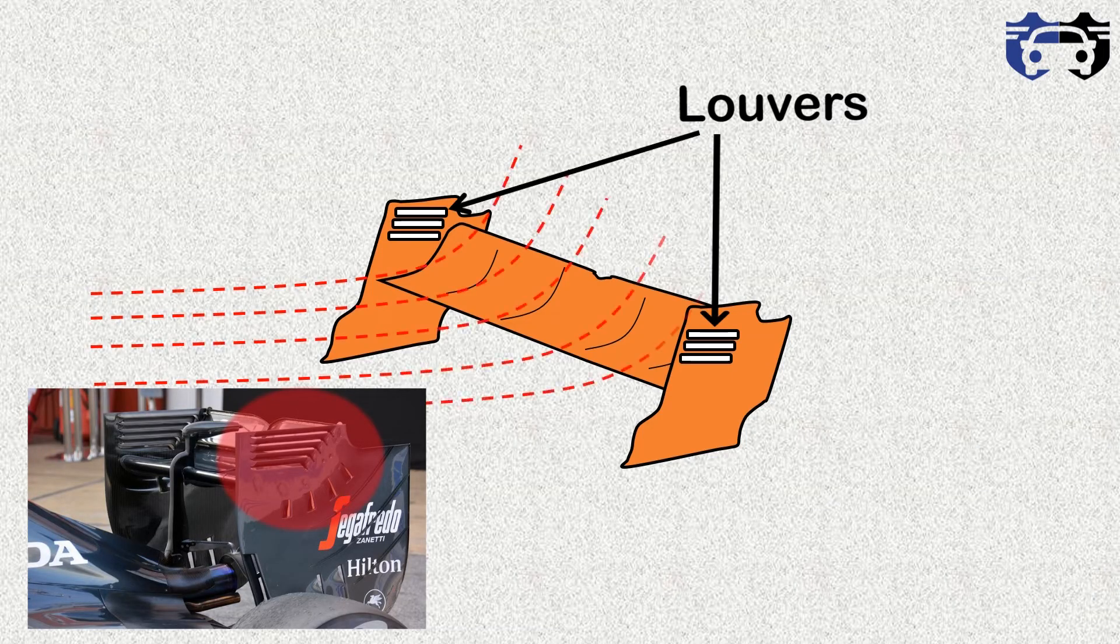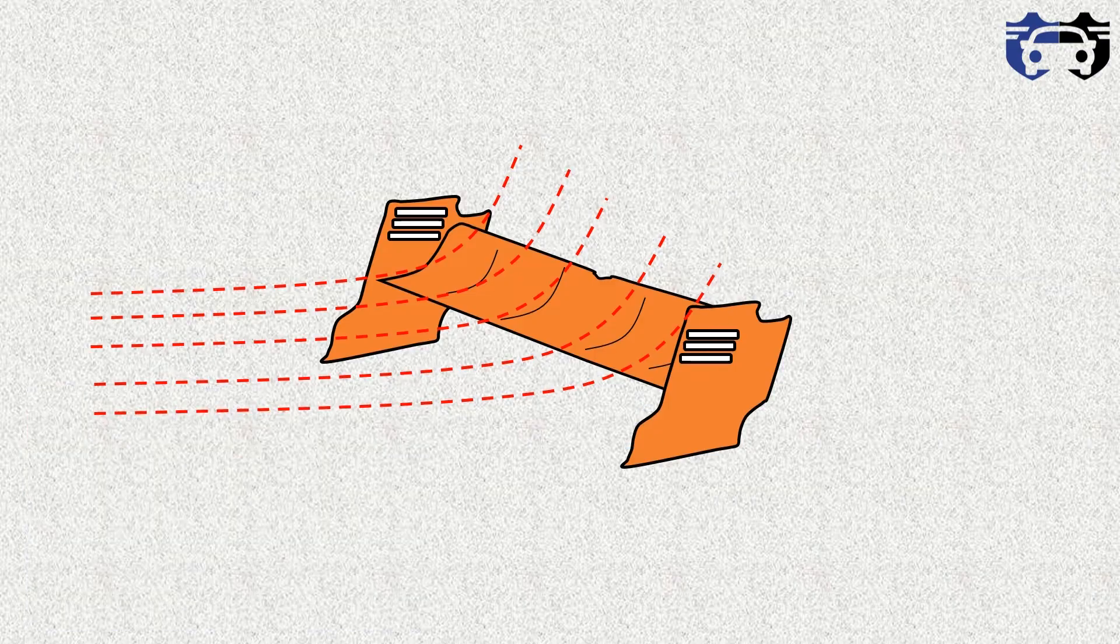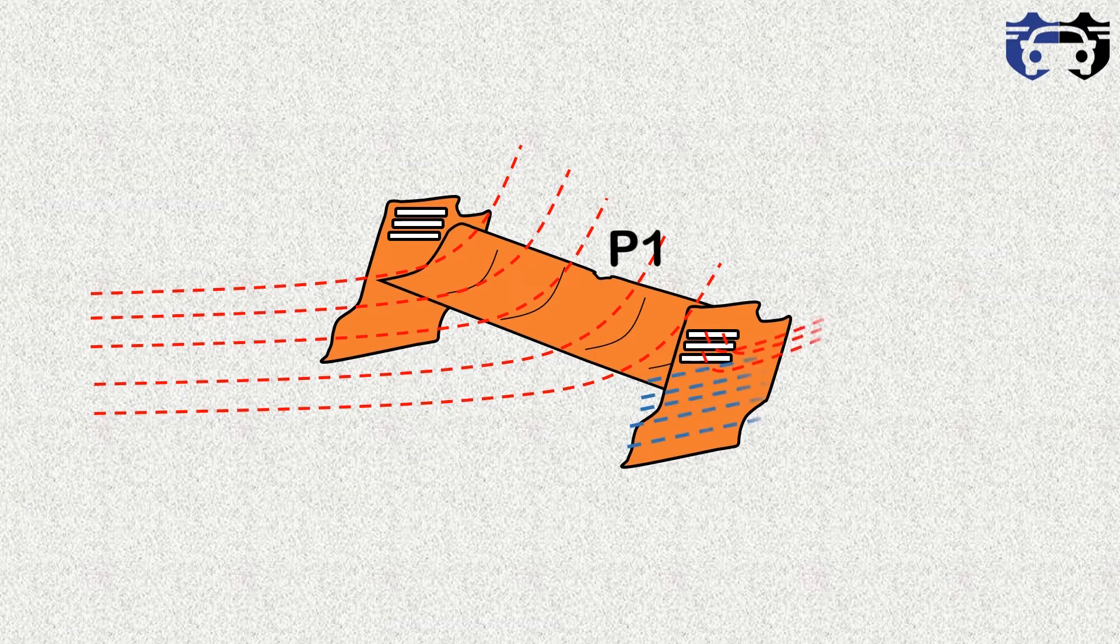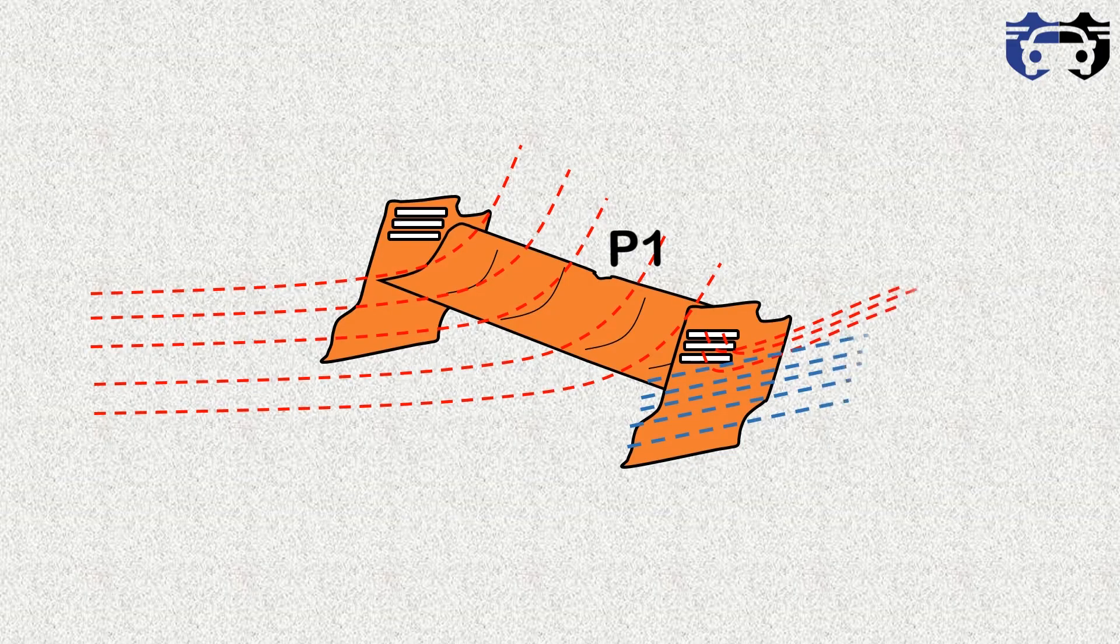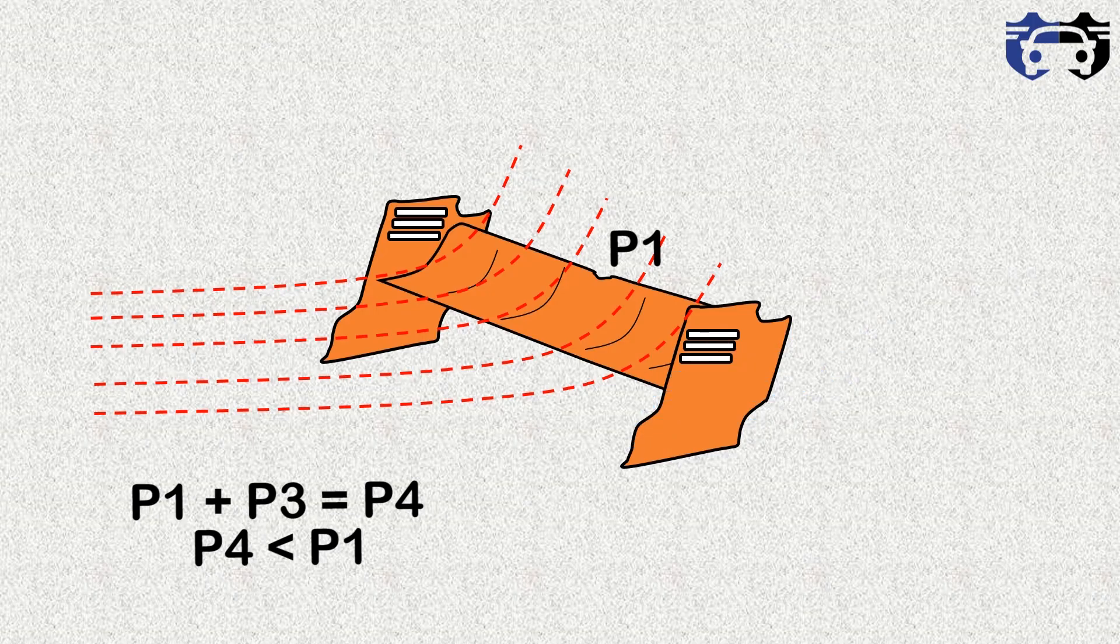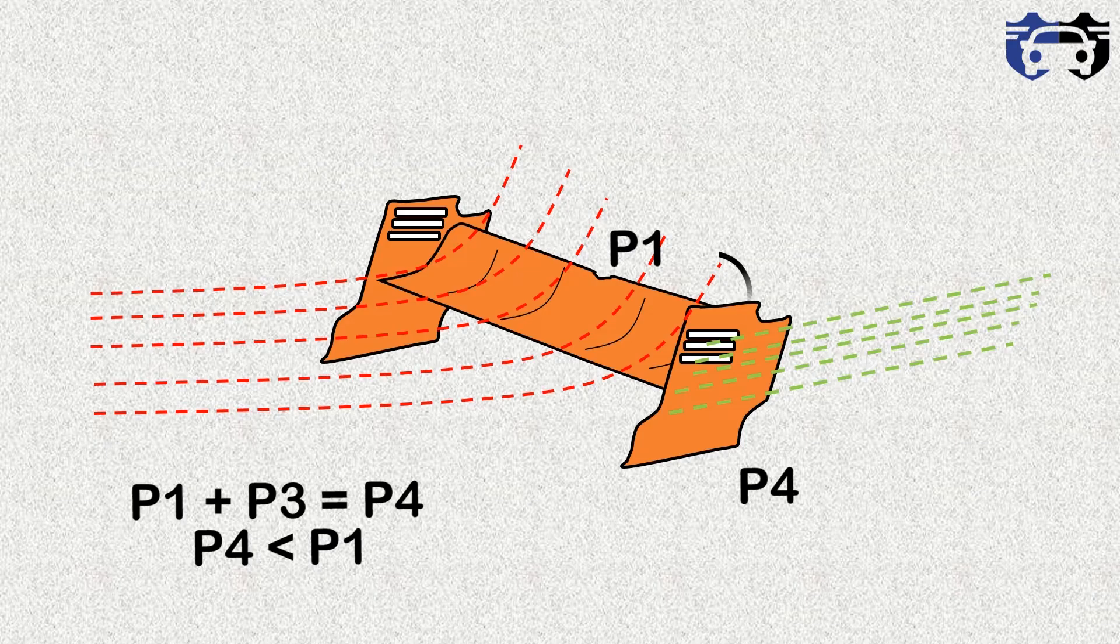So the pressure at top is P1. It rushes out from the louvers getting mixed with the outside pressure P3. The combination of these two pressures gives us the pressure P4, which is lower as compared to P1. As the P1 is still greater than P4, small amount of vortices will develop again.